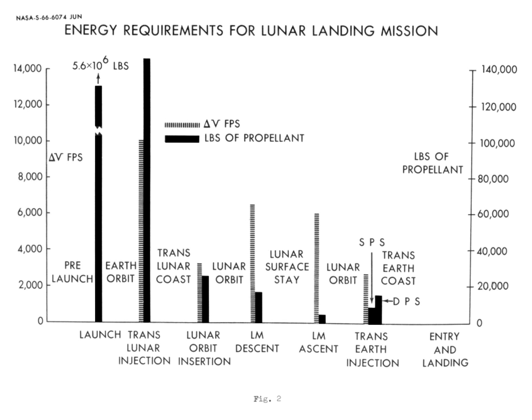A typical delta-v budget might enumerate various classes of maneuvers, delta-v per maneuver, and number of each maneuver required over the life of the mission, and simply sum the total delta-v, much like a typical financial budget. Because the delta-v needed to achieve the mission usually varies with the relative position of the gravitating bodies, launch windows are often calculated from porkchop plots that show delta-v plotted against the launch time.